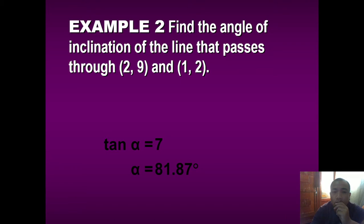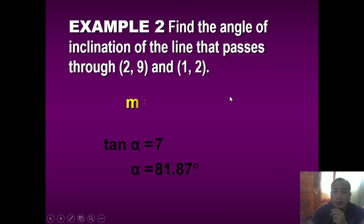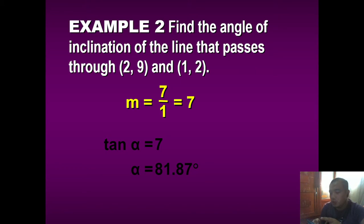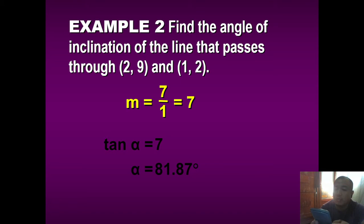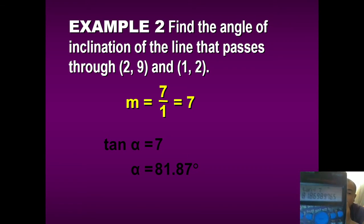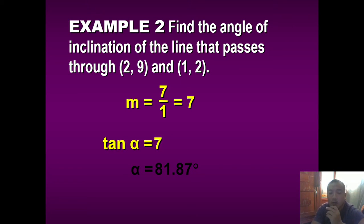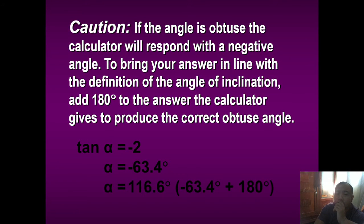Sample: find the angle of inclination of the line that passes through (2, 9) and (1, 2). The slope is (9 - 2) / (2 - 1) = 7/1 = 7. To determine the angle of inclination, press shift tangent 7 on your scientific calculator. Shift tangent 7 equals 81.87 degrees, rounded to the nearest hundredths. Caution: if the angle is obtuse, the calculator will respond with a negative angle. To bring your answer in line with the definition of the angle of inclination, just add 180 degrees to the answer the calculator gives.